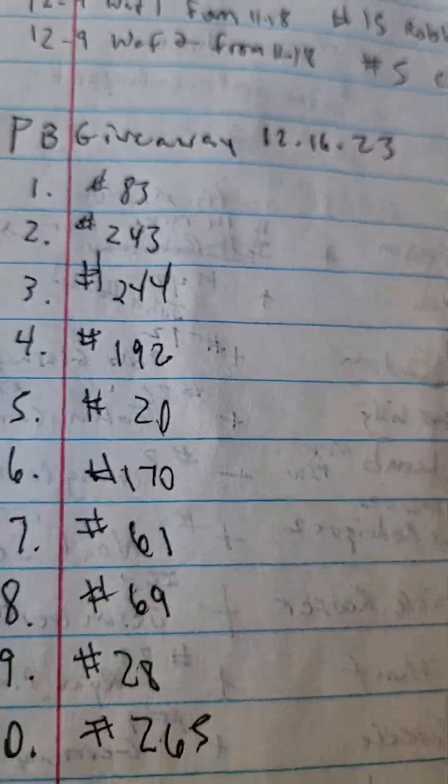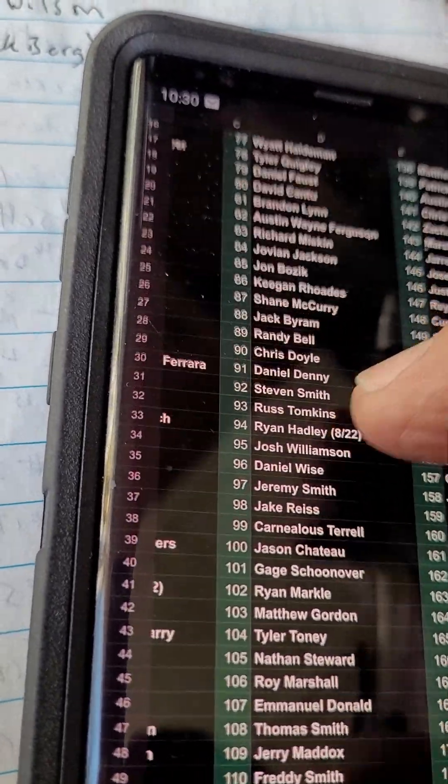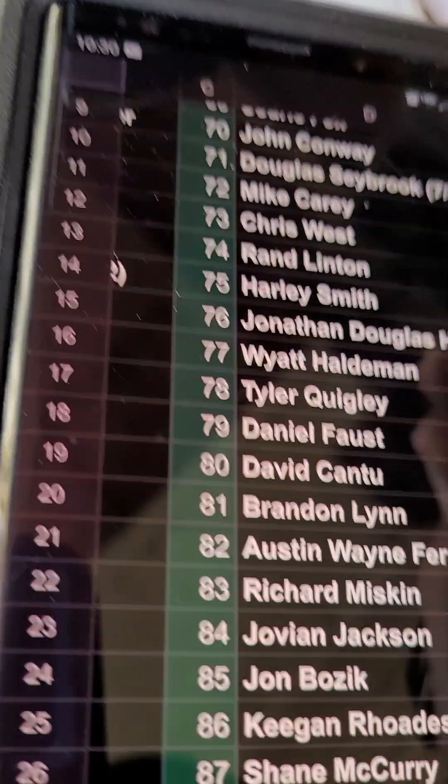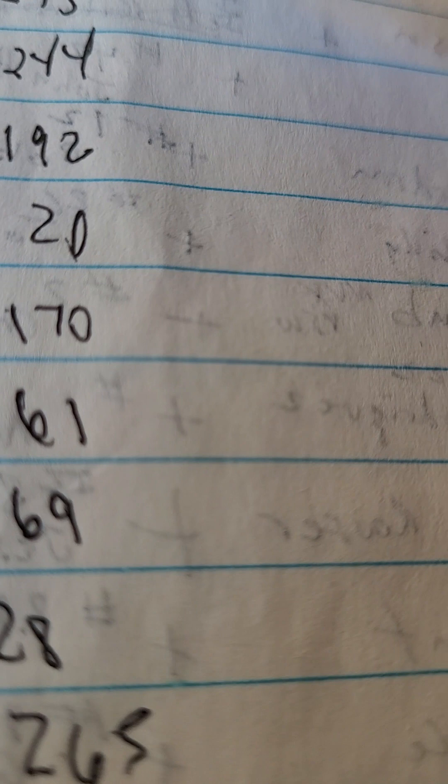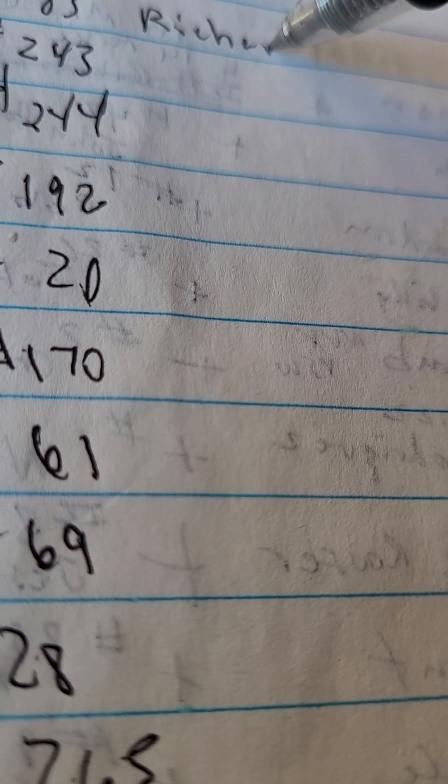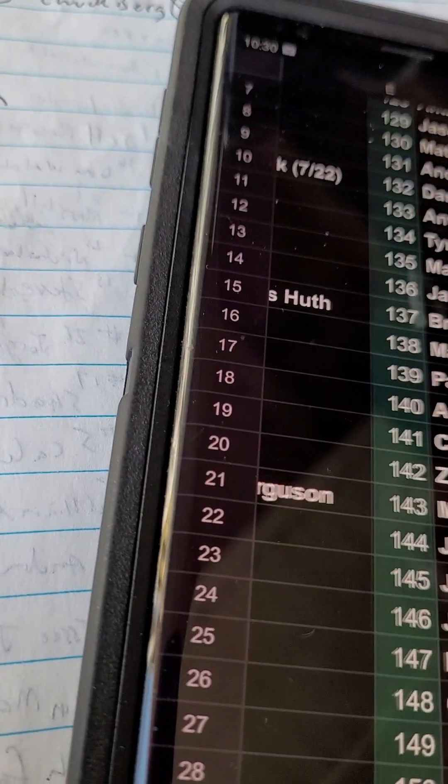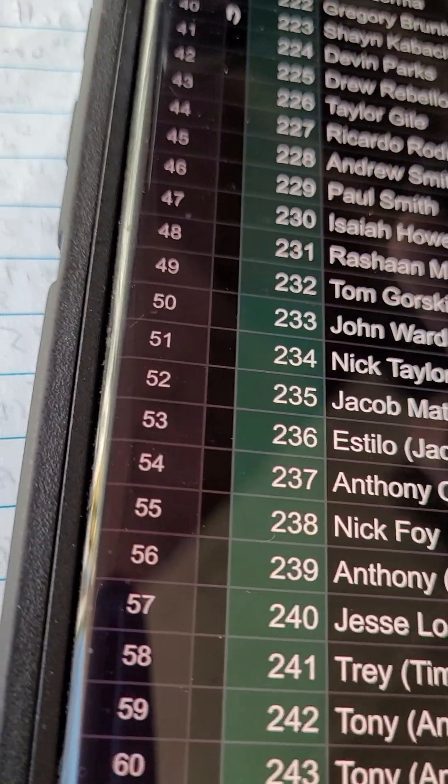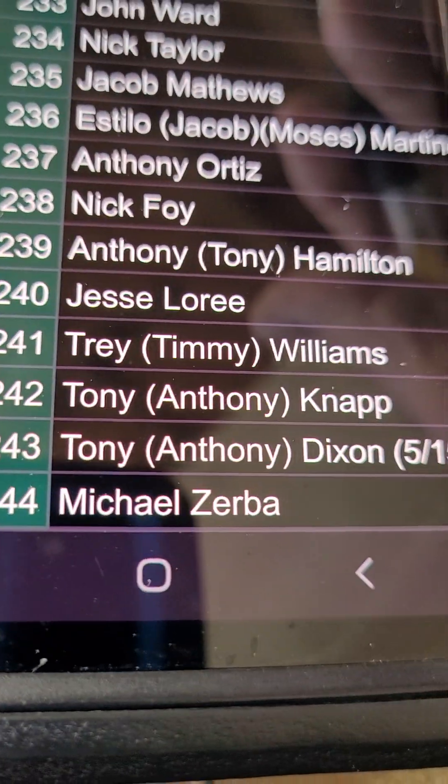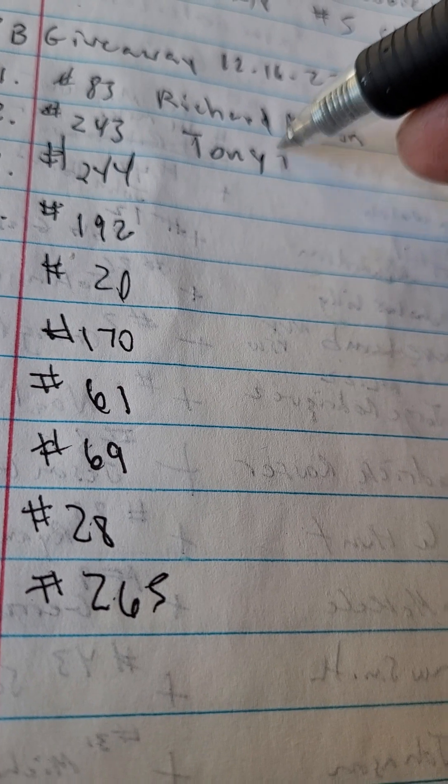So let's go back and where are we starting at? 83. Where is 83? Richard Miskin. 243, Tony Dixon.